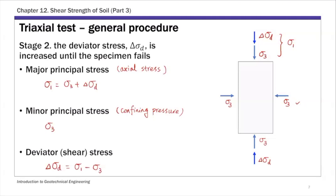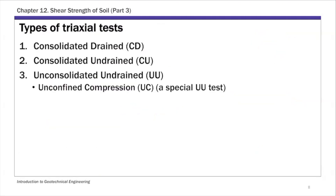Depending on the drainage condition during the two stages, there are three common types of triaxial tests: consolidated drained (CD), consolidated undrained (CU), and unconsolidated undrained (UU). There is also the unconfined compression (UC) test, which is a special type of UU test. Each of these types will be covered in detail in this lecture.